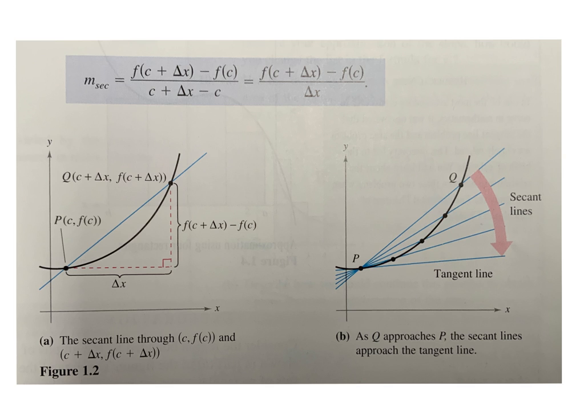That's where we come up with the tangent line problem. On page 45, it says this notion is fundamental to the study of calculus and has two problems. The first is called the tangent line problem, and the second is the area problem. We're going to talk about the tangent line problem first.